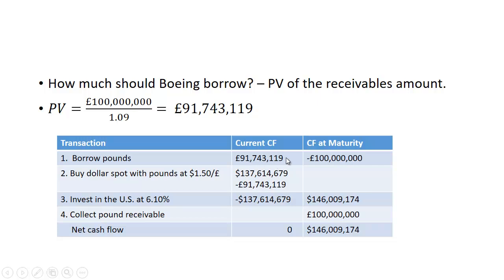When they repay that loan, they will owe the 100 million pounds when they receive the receivables at the end of the year. They then convert this amount — they sell these pounds for dollars. At $1.50 for every pound, they get $137,614,679.